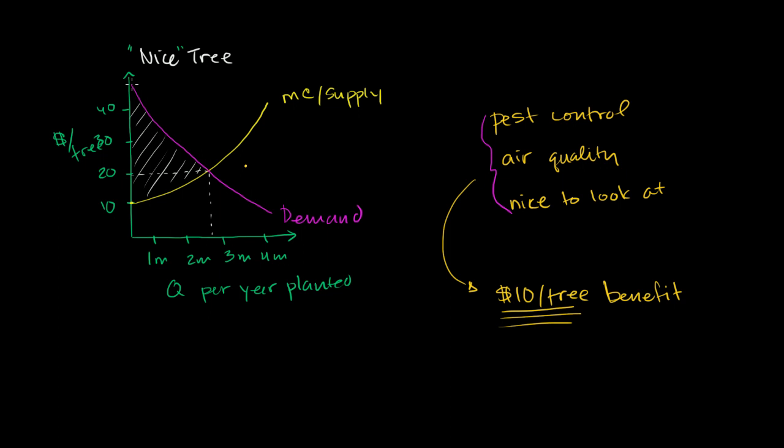And so you would essentially, at this first tree, it looks like it's almost $50 of benefit. But if you add society's benefit, it's actually closer to $60 of benefit. And so you're essentially taking this demand curve, and you're shifting it up by $10 when you are factoring in the benefit to society. So that up there. And you could call this the marginal benefit plus the external benefit curve.